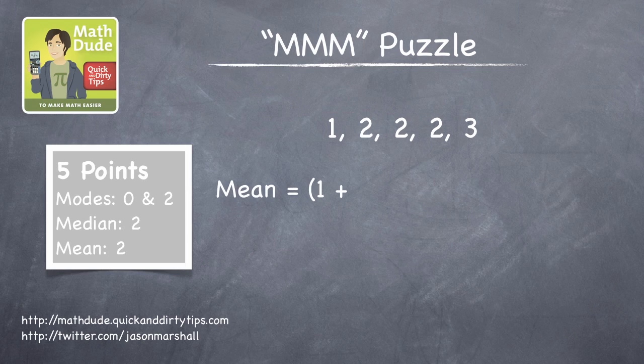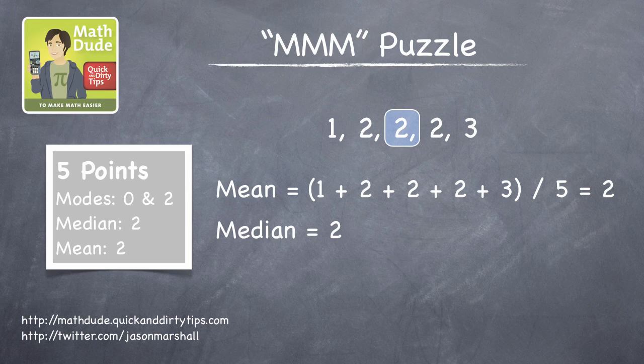The mean is the sum of the list divided by the number of elements in the list. In this case, it's 2. The median is the middle number in the list when we write it in order from smallest to largest, and the mode is the number that occurs most frequently. In this case, the median and mode are both 2.